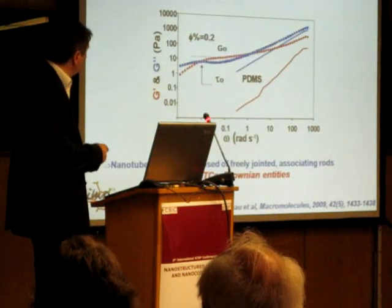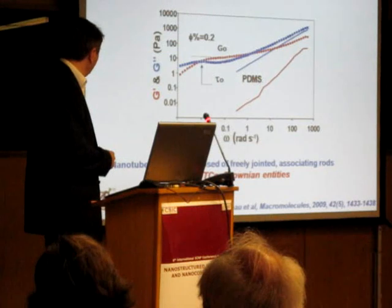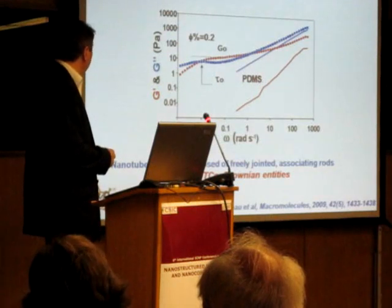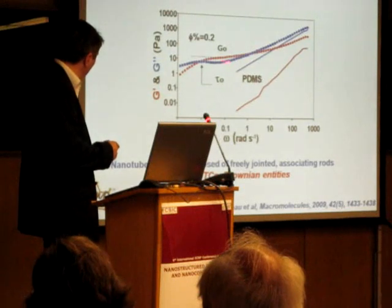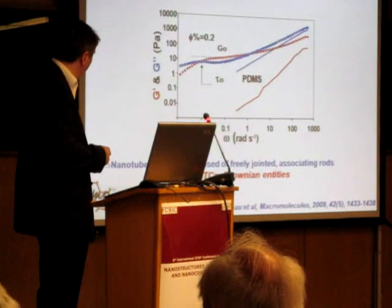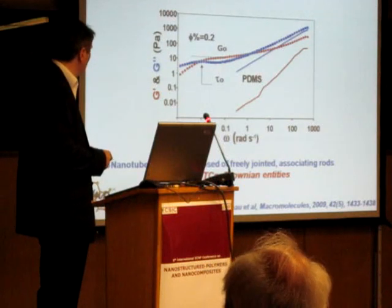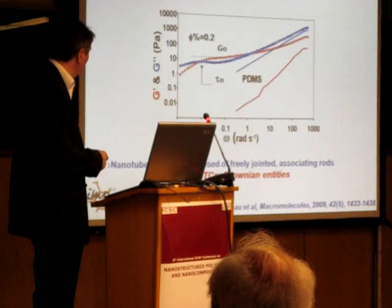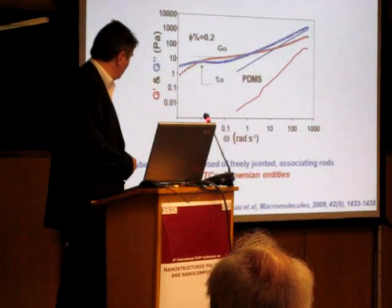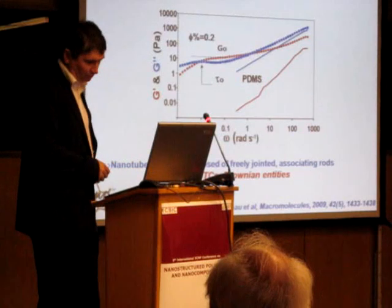So from this curve, you can also see a nanotube network. Of course, you have a network of nanotubes because here you have this plateau modulus connected to this network. It's composed of freely associating rods. So we have a Brownian entity of these nanotubes.